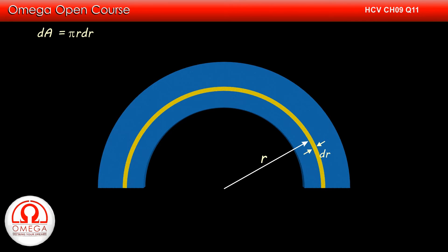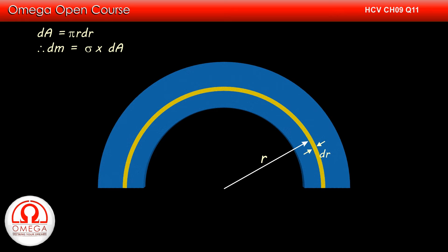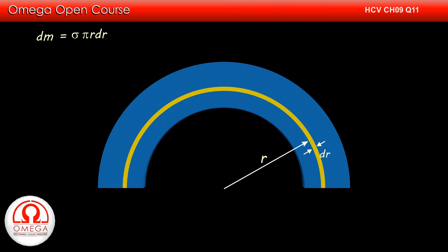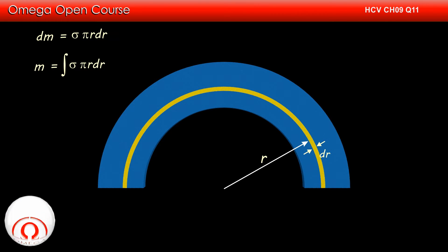If we assume the mass per unit area of the plate to be sigma, then the mass of the ring is sigma·pi·r·dr. If we add the masses of all the rings in the plate, we get the mass of the entire plate. Adding such infinitesimally small quantities is what we call integration. So basically, the mass of the plate is the integration of sigma·pi·r·dr.